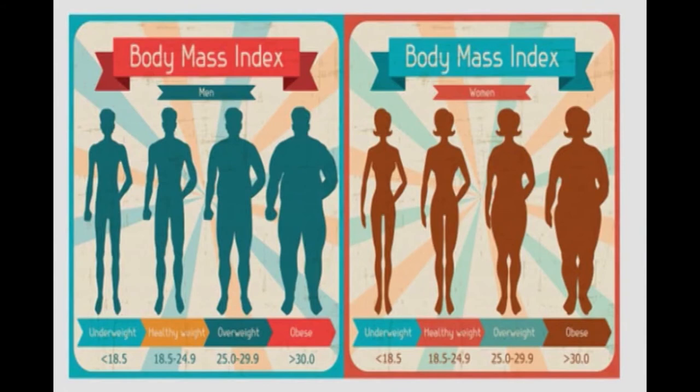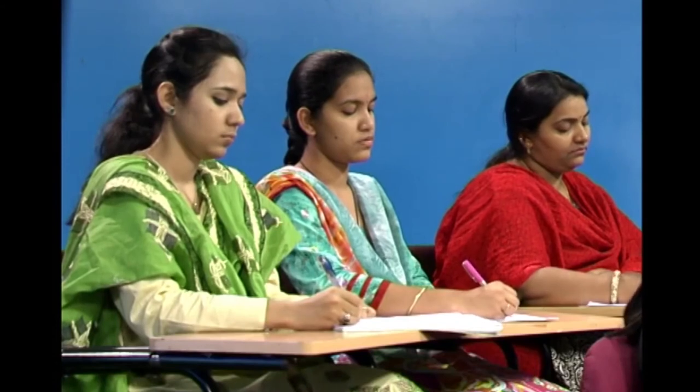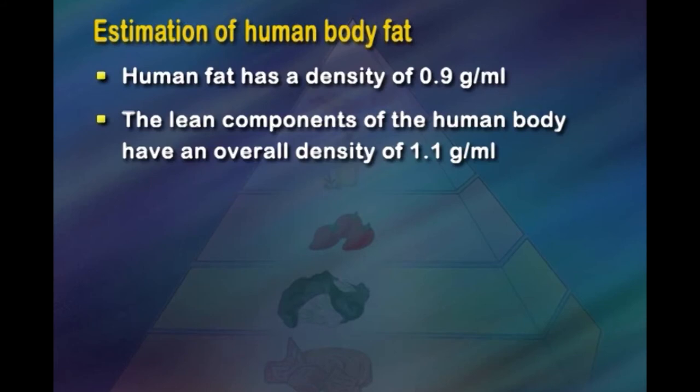There are different ways to estimate body fat percentage. BIA body fat scale is one method. Body composition can also be measured via body density — the most accurate method. The general formula for body composition based on water, fat, protein, and mineral is: 1/Db = W/Dw + F/Df + P/Dp + M/Dm, where Db is overall body density. A reasonably accurate estimation can be obtained via a two-compartment model: human fat has a density of 0.9 g/mL and lean components have an overall density of 1.1 g/mL.